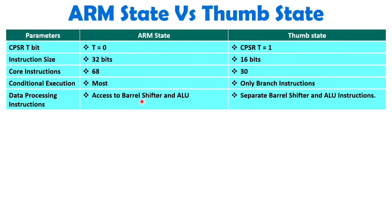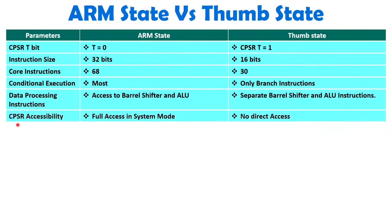In Thumb state, you need to write separate instructions for the shifting operation and for arithmetic/logic operations. But in ARM state, a single instruction can operate both the barrel shifter and ALU. Regarding CPSR accessibility — the current program status register — in ARM state, if the user invokes system mode, they can have full access to the CPSR.